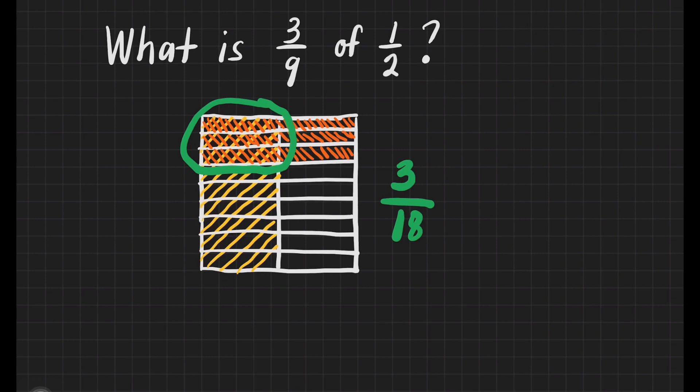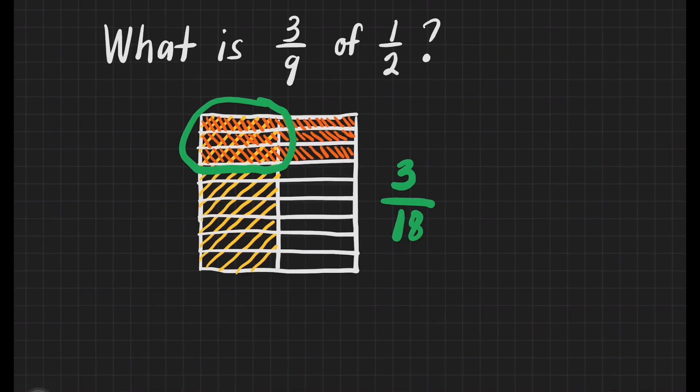So our answer is 3/18. But this is not yet the final answer. We'll change it into lowest terms. What number can we divide both 3 and 18 by? That's 3. So 3 divided by 3 is 1, and 18 divided by 3 is 6. So our answer is 1/6.